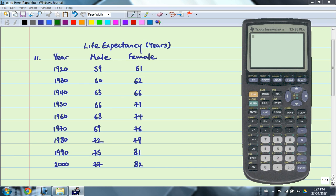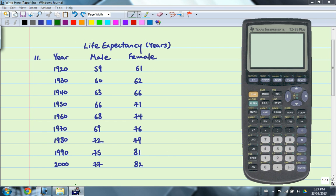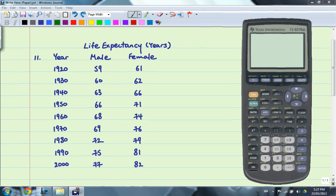The first one will be from section 6.3, modeling data with a line of best fit. Number 11, it is about life expectancy for Canadians, both male and female, from the year 1920 to 2002. So I have the data listed on the left-hand side here for reference. And the question is in three parts.